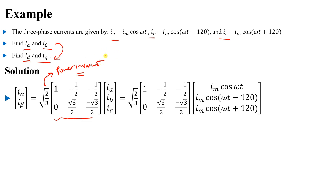Using the power-invariant transformation means the power obtained from the dq frame equals the power obtained from the alpha-beta frame, which also equals the power from the three-phase system. However, the amplitude of i_alpha will not equal the amplitude of i_a because of the power-invariant scaling. I used this form because it will be needed in the next lesson.